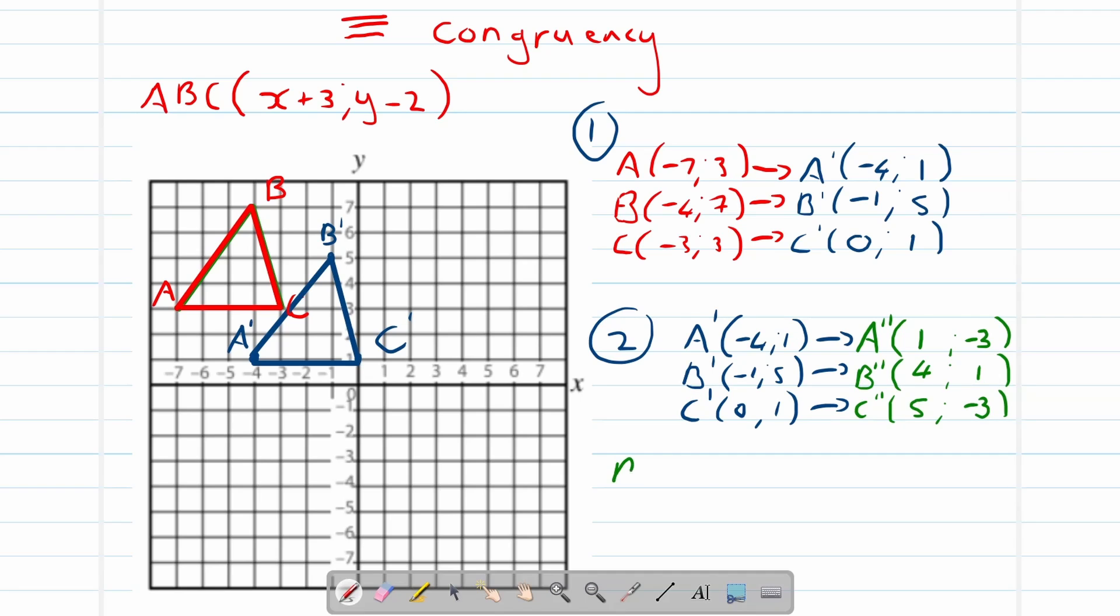Now my question is, what is the rule? How did it translate? Let's see. Remember it's easiest to focus on one coordinate and then just apply the rest. Negative 4 to 1, so we had to add 5. Can you see that? Let's test that with all the other x values. Remember, x is the first position, y is the second. Negative 1 to 4, we added 5. 0 to 5, we added 5.